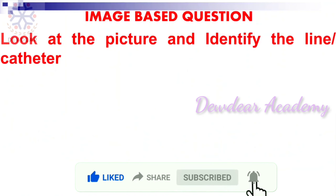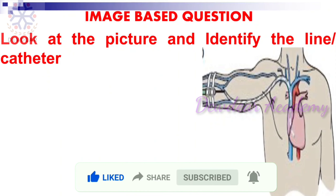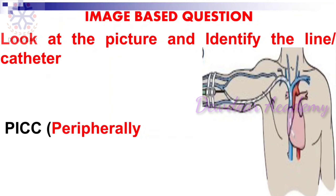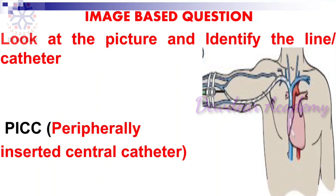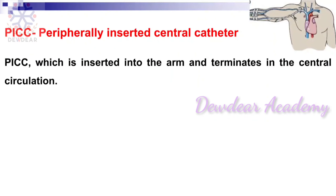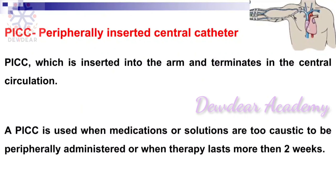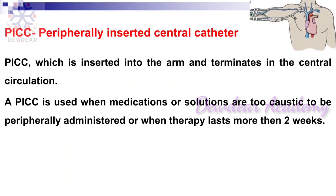Look at the picture and identify the line or catheter. The answer is peripherally inserted central catheter, or PICC. A PICC is inserted into the arm and terminates in the central circulation. It is used when medications or solutions are too caustic to be peripherally administered, or when therapy lasts more than two weeks.